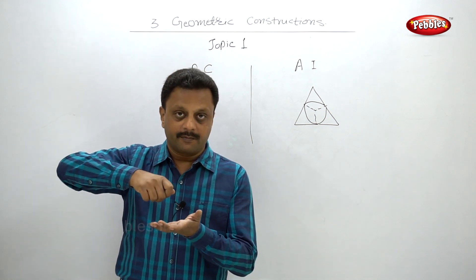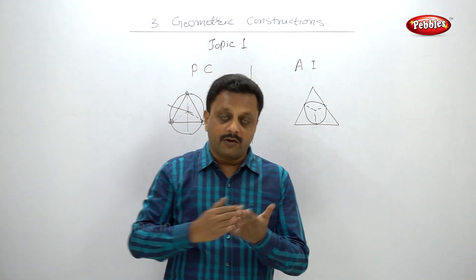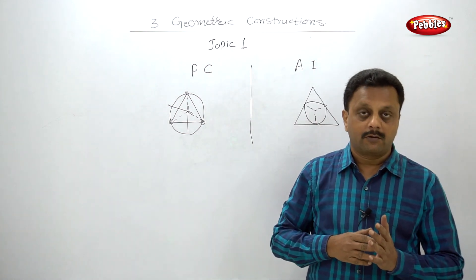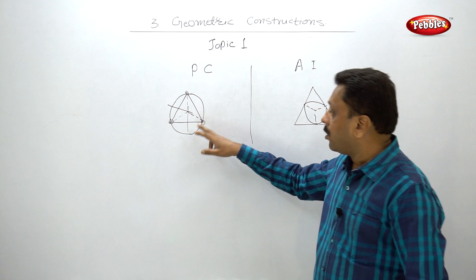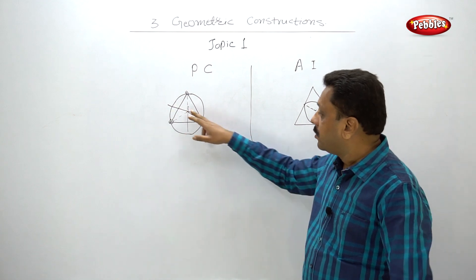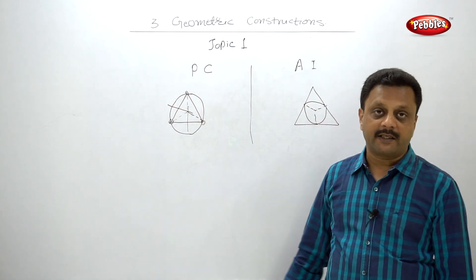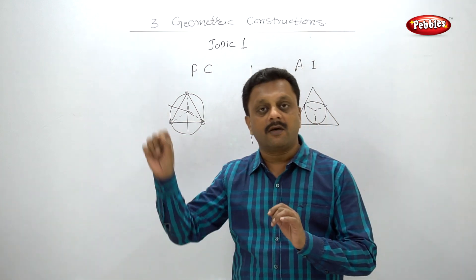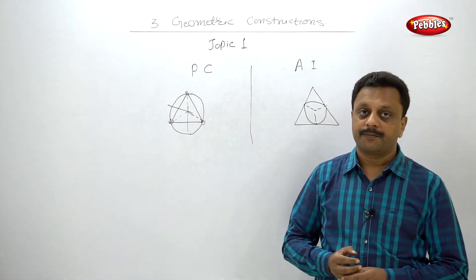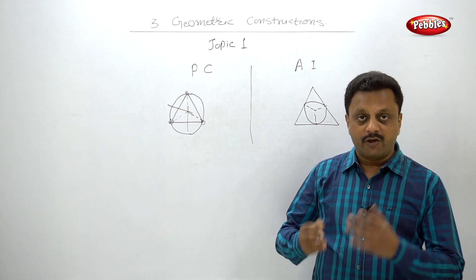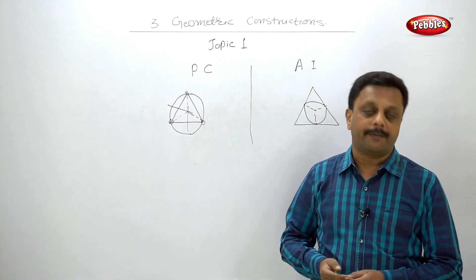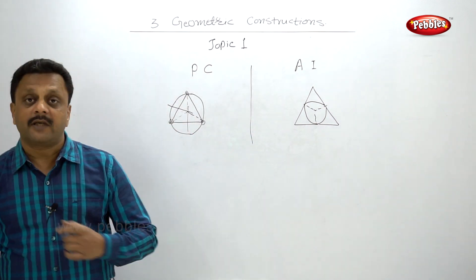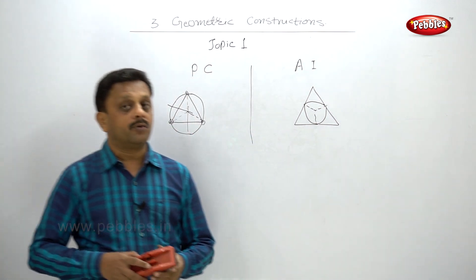You can also draw the third perpendicular bisector to confirm that all three lines intersect at a single point. Many times in exams the paper shifts and the three lines don't meet at one point. So best practice: draw any two perpendicular bisectors, take that intersection point, and make sure the third perpendicular bisector also passes through that point. Now let us solve a few examples and then go to Exercise 3.1.